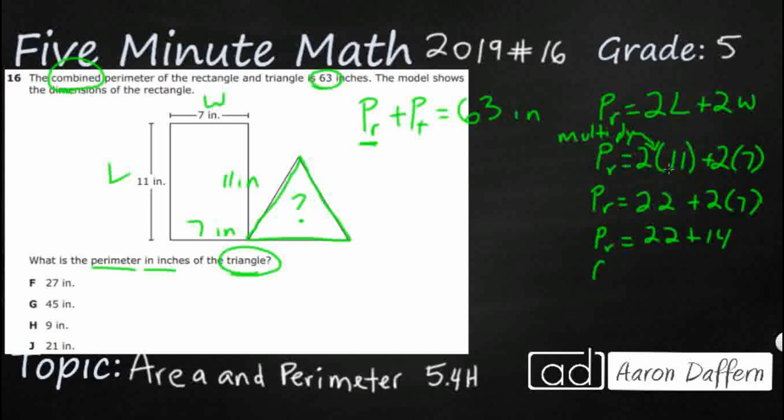So now we've only got one operation left. So this perimeter here is going to be 22 plus 14, that is 36. Put our inches back.